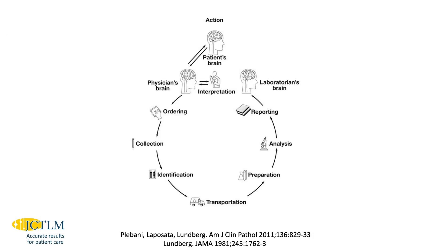This diagram shows what we call the brain-to-brain loop in laboratory medicine. The physician interacts with the patient to formulate a hypothesis about the disease, then orders laboratory tests. Specimens are collected from the patient and transported to the laboratory. Measurements are made and laboratory results are reported back to the physician, along with interpretive information about those results. The physician uses the laboratory information, along with other information about the patient, to formulate a hypothesis and an action plan to treat the disease.